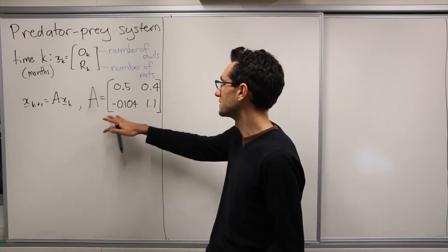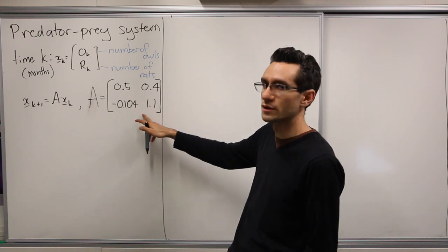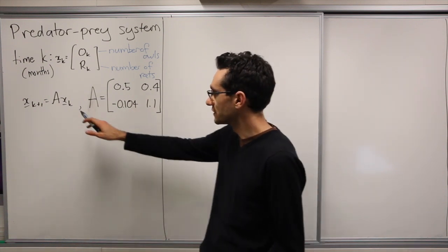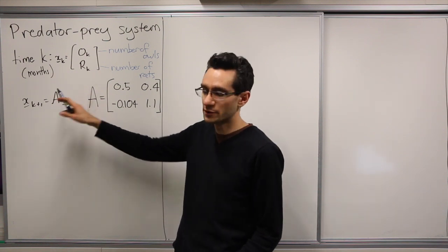I'll just write out the matrix A, which is given by 0.5, 0.4, -0.104, and 1.1. The vector at time k+1 is given by multiplying the vector at time k on the left by A.